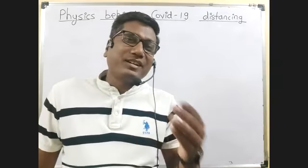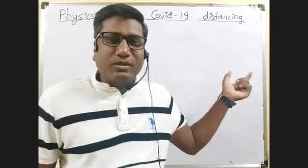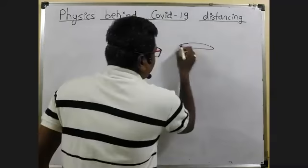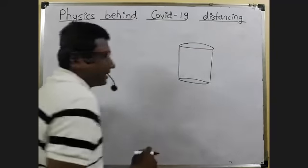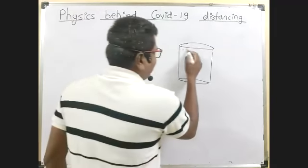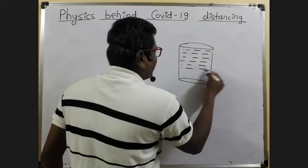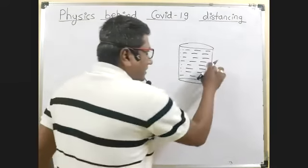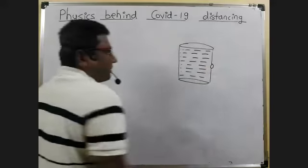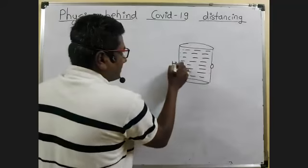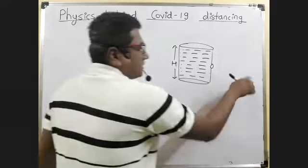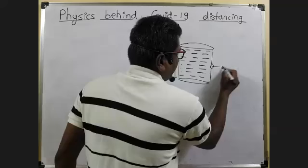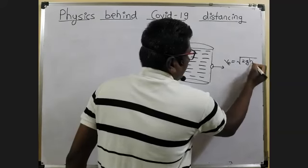We will try to understand and imagine why these three feet, approximately minimum three feet distance is necessary. The key concept behind COVID distancing is the speed of efflux, which is nothing but square root of 2gh.